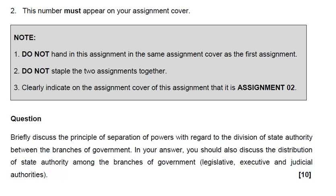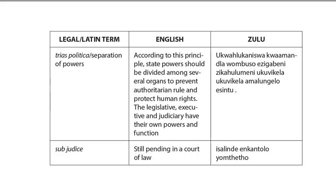First, we need to find out what the separation of powers is all about. Here is the definition: according to this principle, the state powers should be divided among several organs to prevent authoritarian rule and protect human rights. The legislative, executive, and judiciary have their own powers and functions. We need to find out what the functions of these three different authorities are.